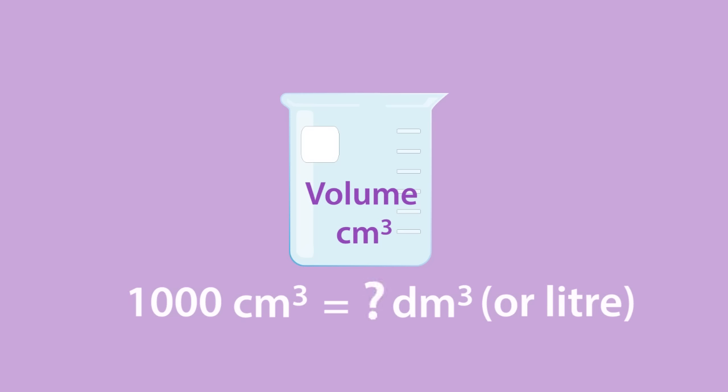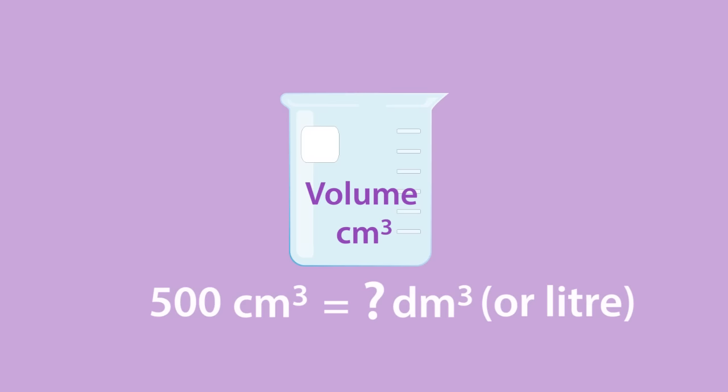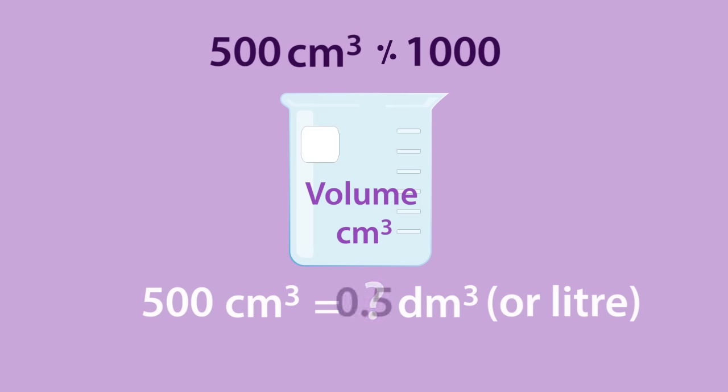So, how many decimetre cubed is 500 cubic centimetres? Pause, think and continue when ready. To get the answer, you need to divide 500 cubic centimetres by 1000. So 500 cubic centimetres is the same as 0.5 decimetre cubed. Did you get it right?